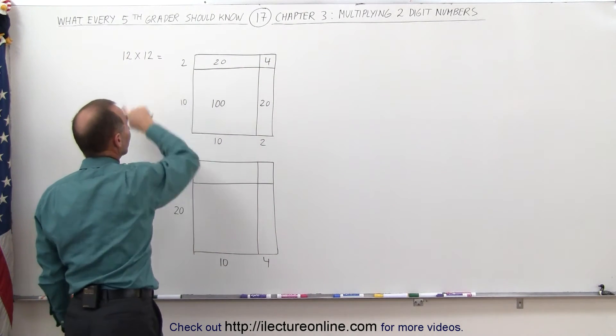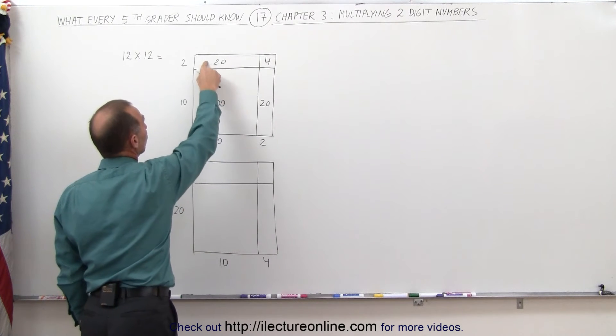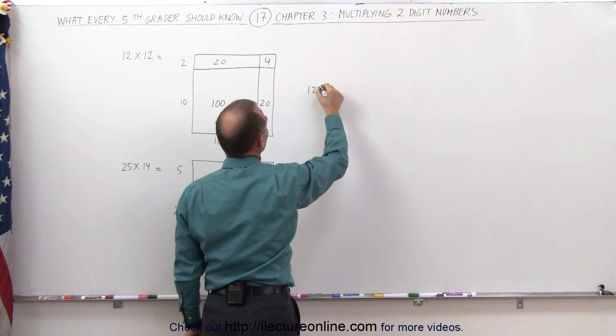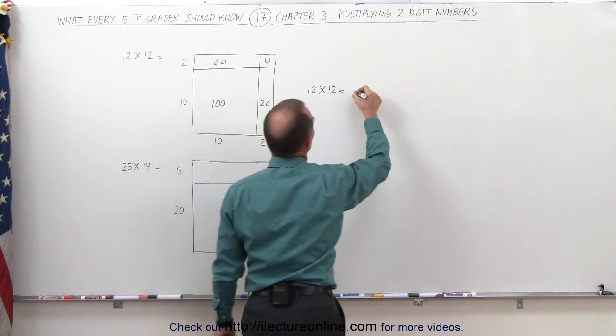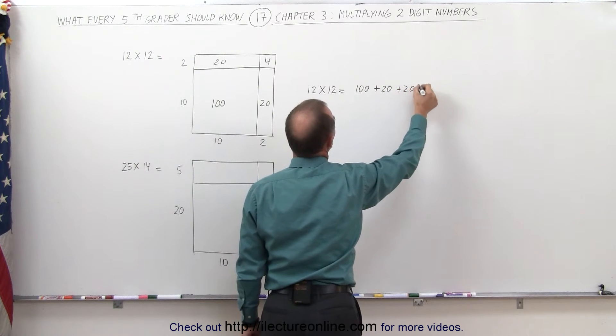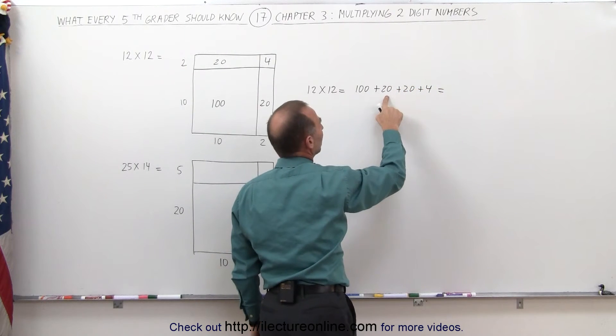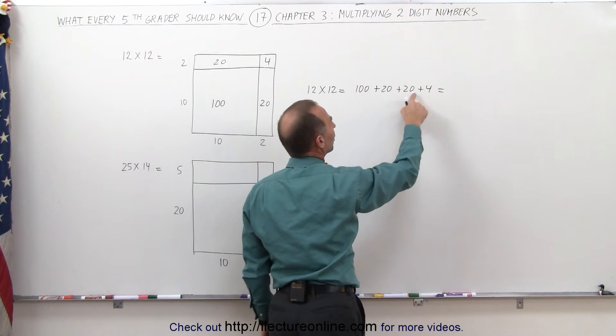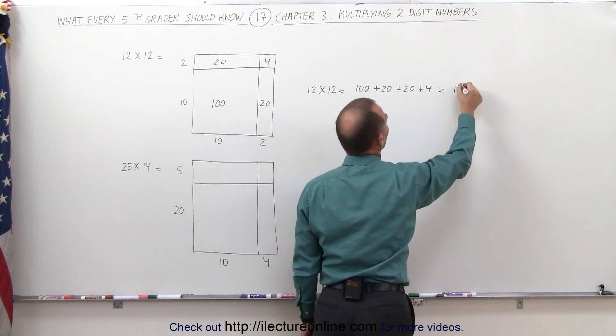Therefore, 12 times 12 is the same as adding 100 plus 20 plus 20 plus 4. So we can say that 12 times 12 is equal to 100 plus 20 plus 20 plus 4. And 100 plus 20 is 120. 120 plus 20 is 140. 140 plus 4 is 144.